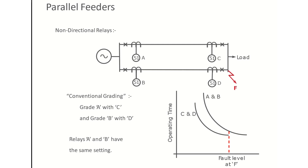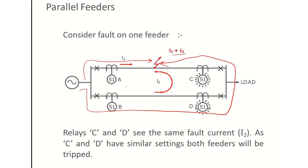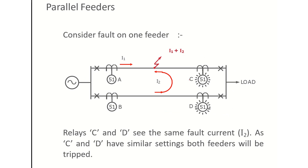Now what are the problems when we are using all relays A, B, C, D as non-directional relays? Consider there is a fault on feeder 1. For this fault, suppose the fault current is I1 plus I2, with I1 current flowing from the source side and I2 is the current flowing from the other side. Suppose it is 2 amperes from this side and 1 ampere from this side.